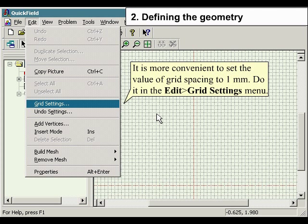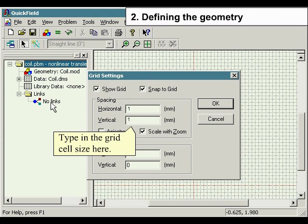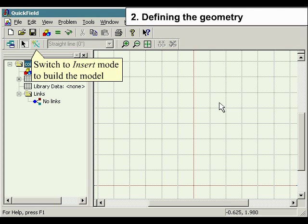It is more convenient to set the value of grid spacing to 1 mm. Do it under the Edit menu and select Grid Settings. Type in the grid cell size here. Switch to Insert mode to build the model.